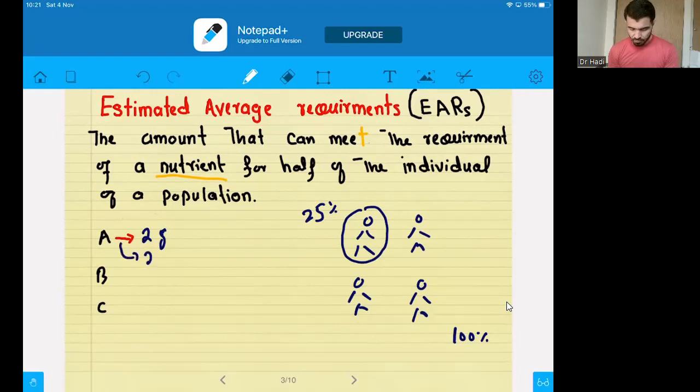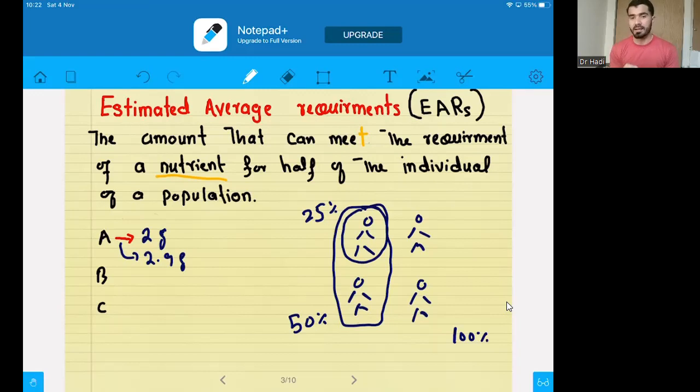Then we go slightly up. We go to 2.9 grams. When we gave 2.9 grams to all of this population, we realized that out of four, two persons got optimum health. This means that 50% of the population is now okay. 50% of the population will be okay if the nutrient A is supplied in 2.9 grams. So, this 2.9 grams will be called EAR. This is EAR for A, for nutrient A.